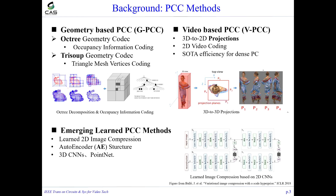All these methods are based on traditional compression technologies. Recently, inspired by learned image compression, many works have tried to apply learned compression technologies to point clouds. They are based on popular autoencoder structures with 3D convolutions or point networks for compression, and our work achieves state-of-the-art performance.